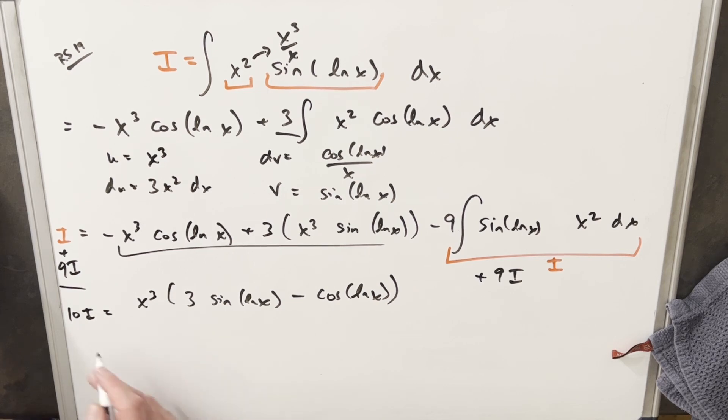But this is 10 copies of the integral. We just want 1. So all I need to do here is let's just divide by 10, divide by 10, and I'll add a plus C. And that's it.